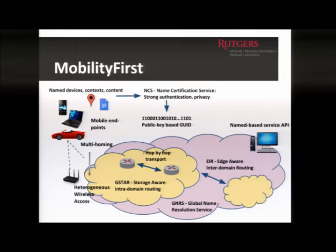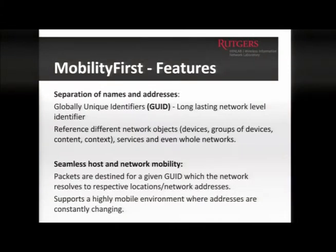Our focus is mobile endpoints. One key component is the GNRS, a distributed name resolution service that manages mappings between GUIDs and network addresses. When you communicate using a GUID, the GNRS figures out where the object is located. We also have our own routing protocol called G-star, an inter-domain routing equivalent called EIR, and because naming is based on unique identifiers, we can provide services like multicast and anycast.